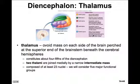Let's begin by looking at the thalamus in the diencephalon. The thalamus is an ovoid mass that occurs on each side of the brain. It's perched at the superior end of the brainstem beneath the cerebral hemispheres. It constitutes about four-fifths of the diencephalon — so it is most of the diencephalon. The two thalami are joined medially by a narrow intermediate mass in about 70% of people.